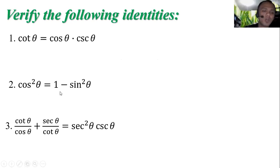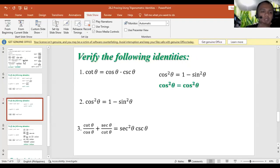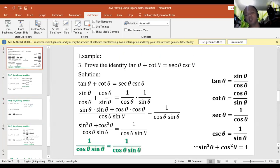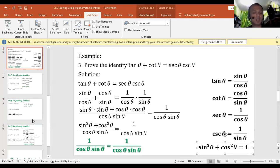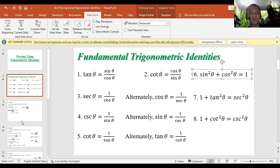Number 2: cosine squared theta equals 1 minus sine squared theta. To verify, substitute 1 minus sine squared theta back to cosine squared theta. This comes from the Pythagorean identity sine squared theta plus cosine squared theta equals 1. Transposing sine squared theta to the other side gives cosine squared theta equals 1 minus sine squared theta.